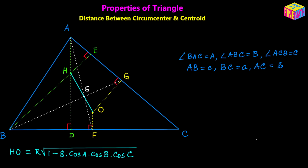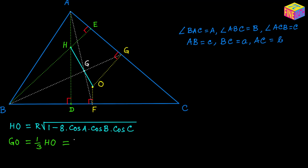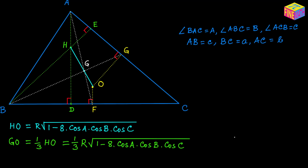Since the centroid divides the line segment in a 2 to 1 ratio, HG is two portions and GO is one portion. That means GO will be one third of HO, which can be written as one third of R times the square root of 1 minus 8 times cosine A times cosine B times cosine C. In other words, GO to GH is 1 to 2, or HG to GO is 2 to 1, confirming GO equals one third of HO. This is Form 1 for the distance between the centroid and the circumcenter.